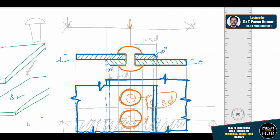This arrangement is called a single riveted chain lap joint. 'Single riveted' means a single row of rivets — not just one rivet. 'Chain' means the rivets fall one behind the other in a straight line, not in a staggered pattern. 'Lap' means one sheet is placed over the other.